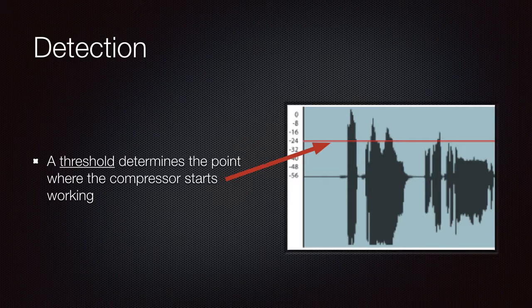The threshold is the most important knob in a compressor as it allows us to set the amount of compression. The lower the threshold, the more compressed the signal will be.